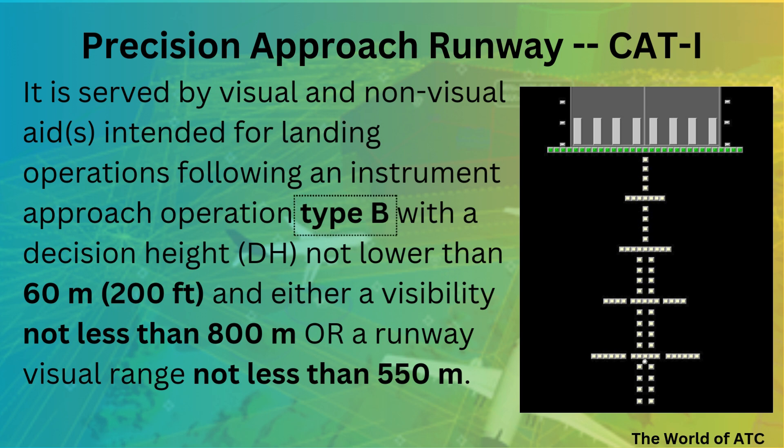In the case of precision approach runway CAT-1, the decision height would not be less than 200 feet, and either visibility not less than 800 meters or an RVR should not be less than 550 meters. If these criteria are met the approach could be continued, otherwise this runway cannot be used.